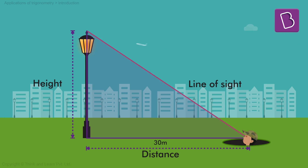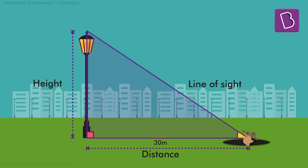But that doesn't work — if you could measure the hypotenuse, you could just as easily measure the height directly. So we cannot measure the hypotenuse. What else can we measure? Remember, we're talking about trigonometry, which has to do with angles. One angle is already a right angle. Can we measure one more angle — the angle of my line of sight with respect to the horizontal? That seems difficult, almost impossible with the naked eye.